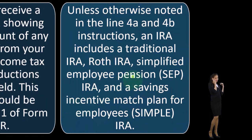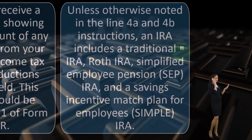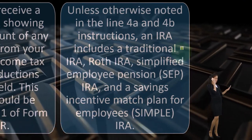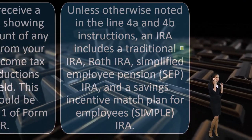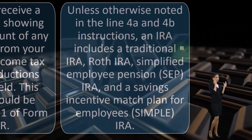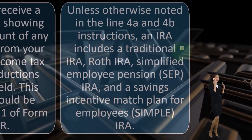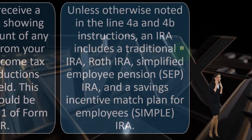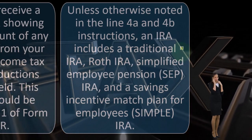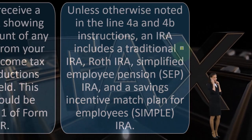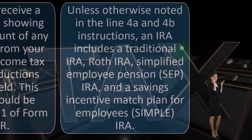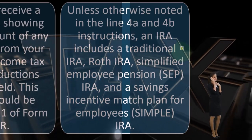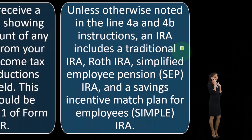A traditional IRA is similar to a 401k plan where you get the benefit of putting the money in and deferring it, instead of reducing the money when you put it in on line one of Form 1040. It's going to be an above-the-line deduction because it wasn't pulled out of your W-2 wages — it has to be that above-the-line deduction.